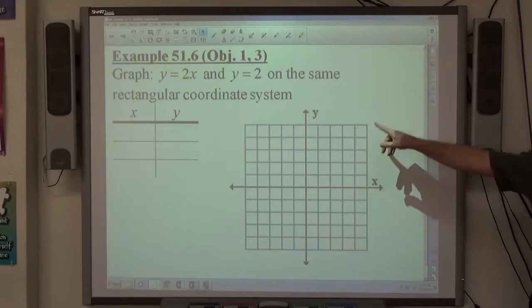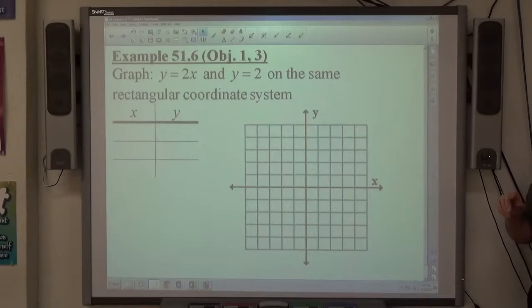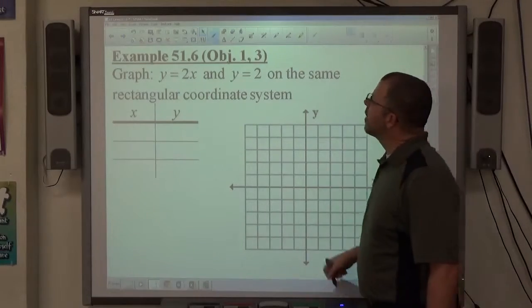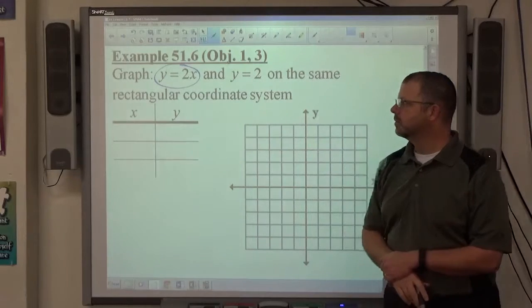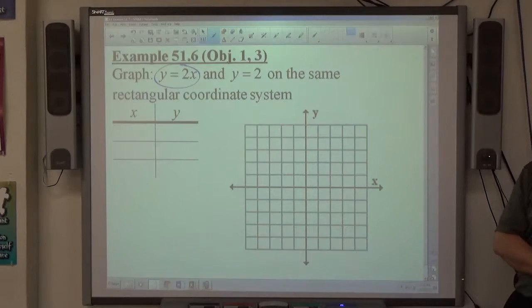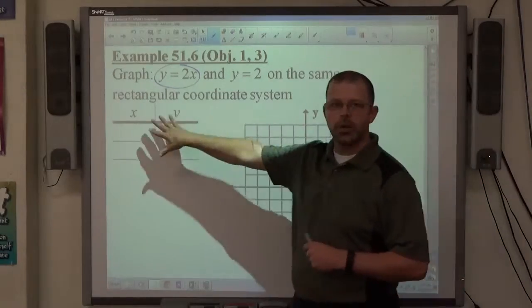Again, I'm going to draw my x-axis and my y-axis, label them x and y. I look at my two equations. Equation one, y equals 2x is what kind of line? It's slanted, right? It's got x and y in it. As soon as I see a slanted line, I'm immediately going to a chart.